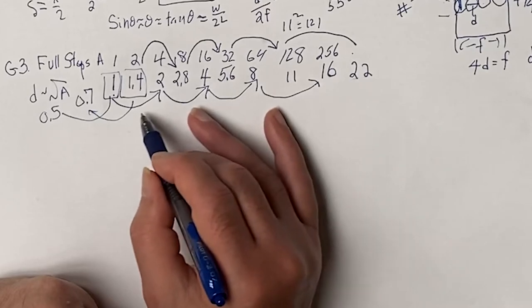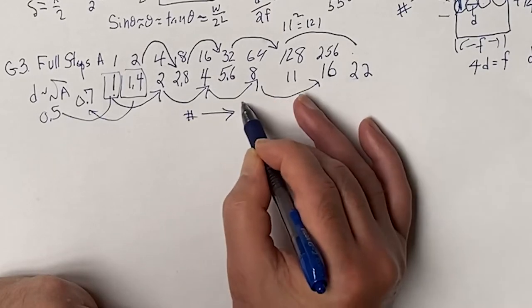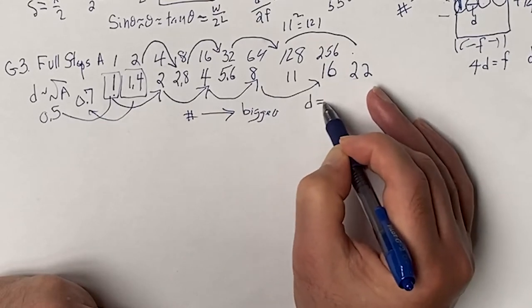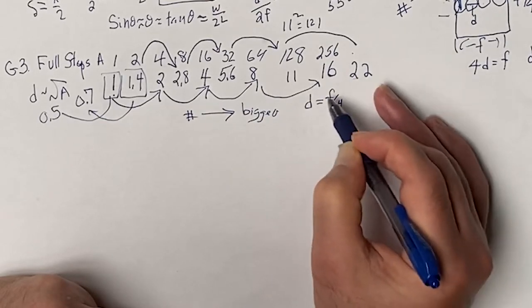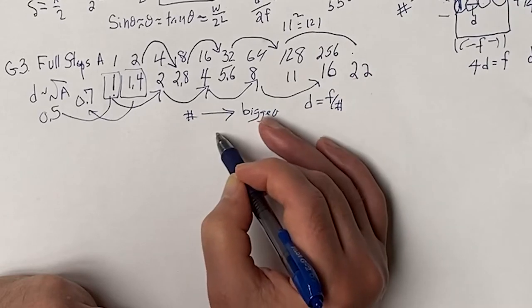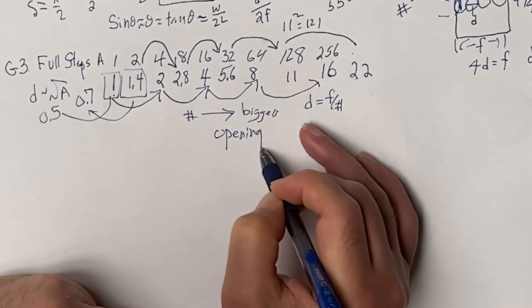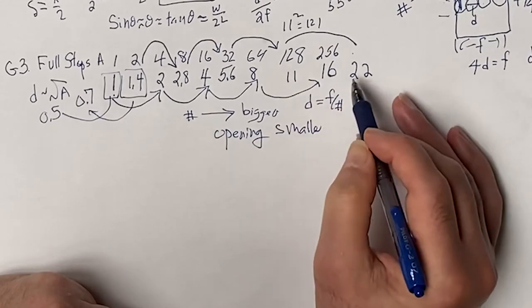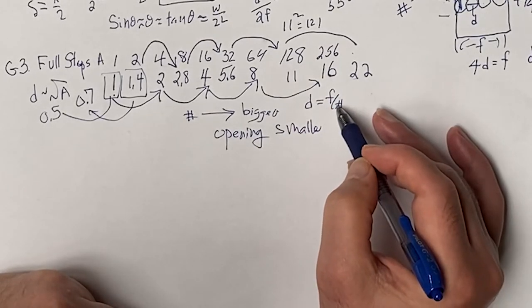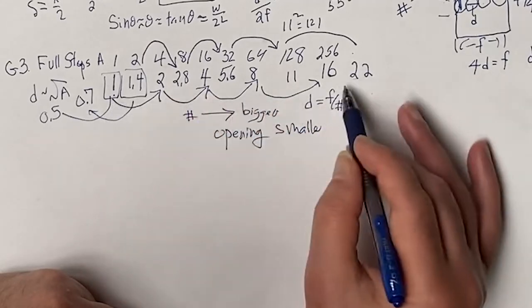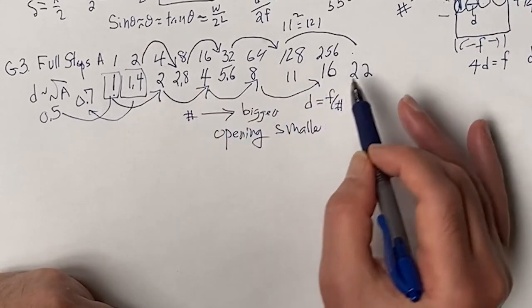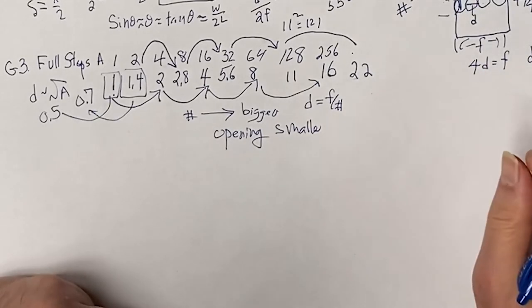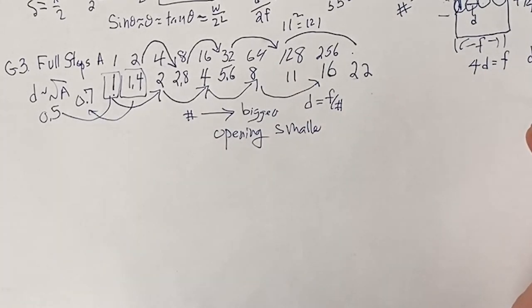Just remember your definition: D = F/N. So as the number gets bigger, you're getting a smaller opening. F22 is a smaller opening than F1. The bigger the f-number, the smaller the aperture.